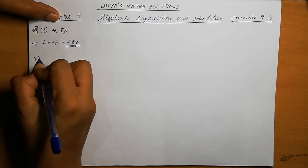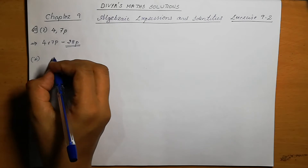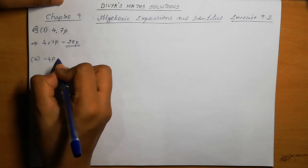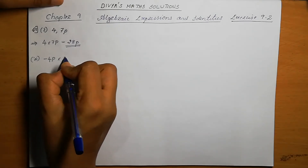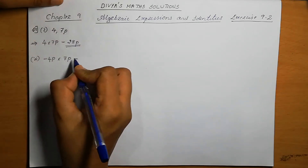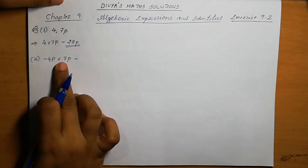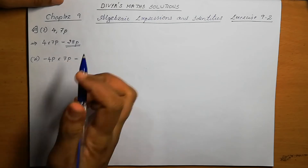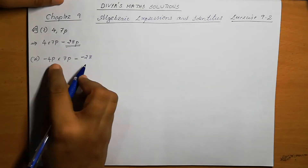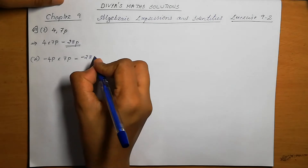Second one is minus 4p into 7p. So here we can multiply minus 4 into 7, which is minus 28. Then p into p is p square.